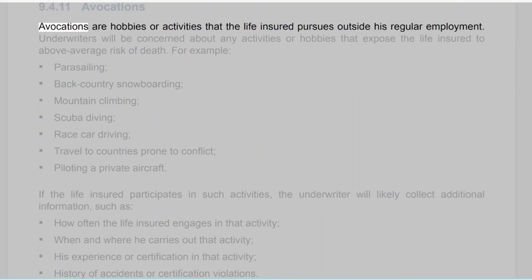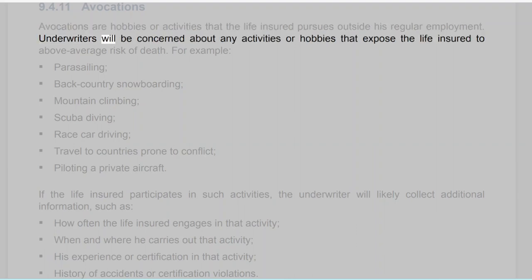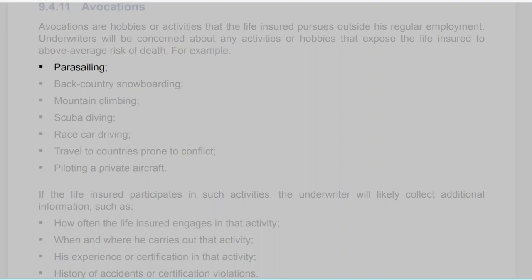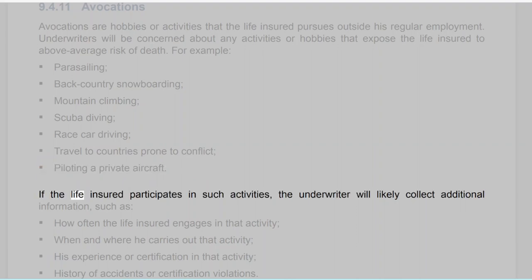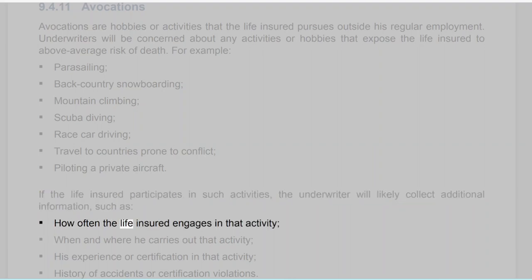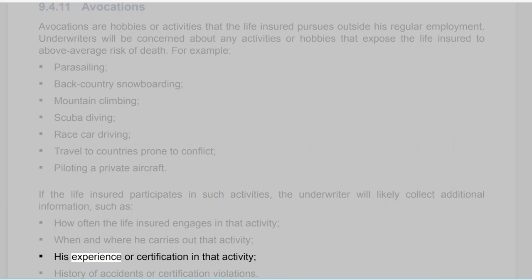Section 9.4.11: Avocations. Avocations are hobbies or activities that the life insured pursues outside his regular employment. Underwriters will be concerned about any activities or hobbies that expose the life insured to above-average risk of death, for example: parasailing, backcountry snowboarding, mountain climbing, scuba diving, race car driving, travel to countries prone to conflict, and piloting a private aircraft. If the life insured participates in such activities, the underwriter will likely collect additional information, such as how often the life insured engages in that activity, when and where he carries it out, his experience or certification in that activity, and history of accidents or certification violations.